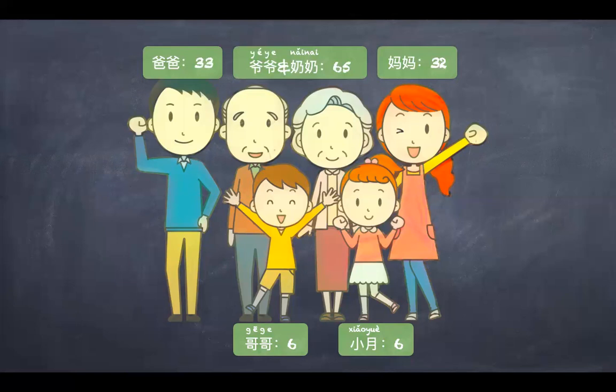小月 的爸爸 多大? 小月 的 妈妈 多大? 小月 的 爷爷 多大? 小月 的 奶奶呢? You're right. 小月 的 奶奶 也 六十五岁. Because she and her grandpa is of the same age.